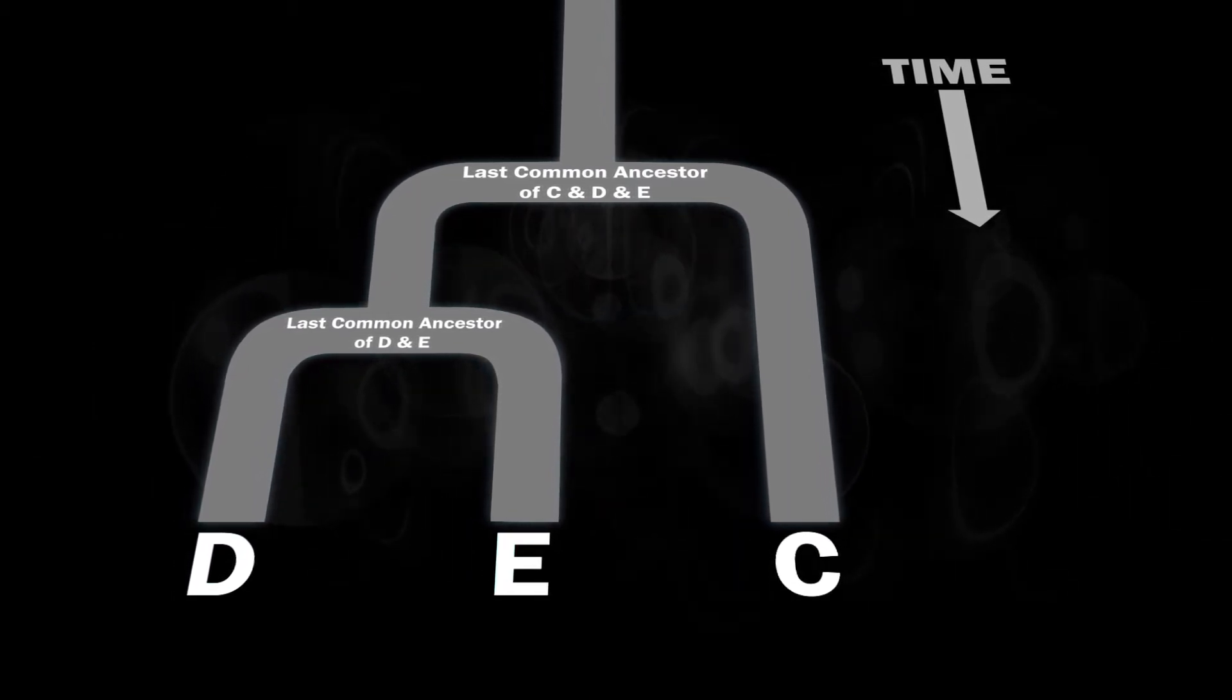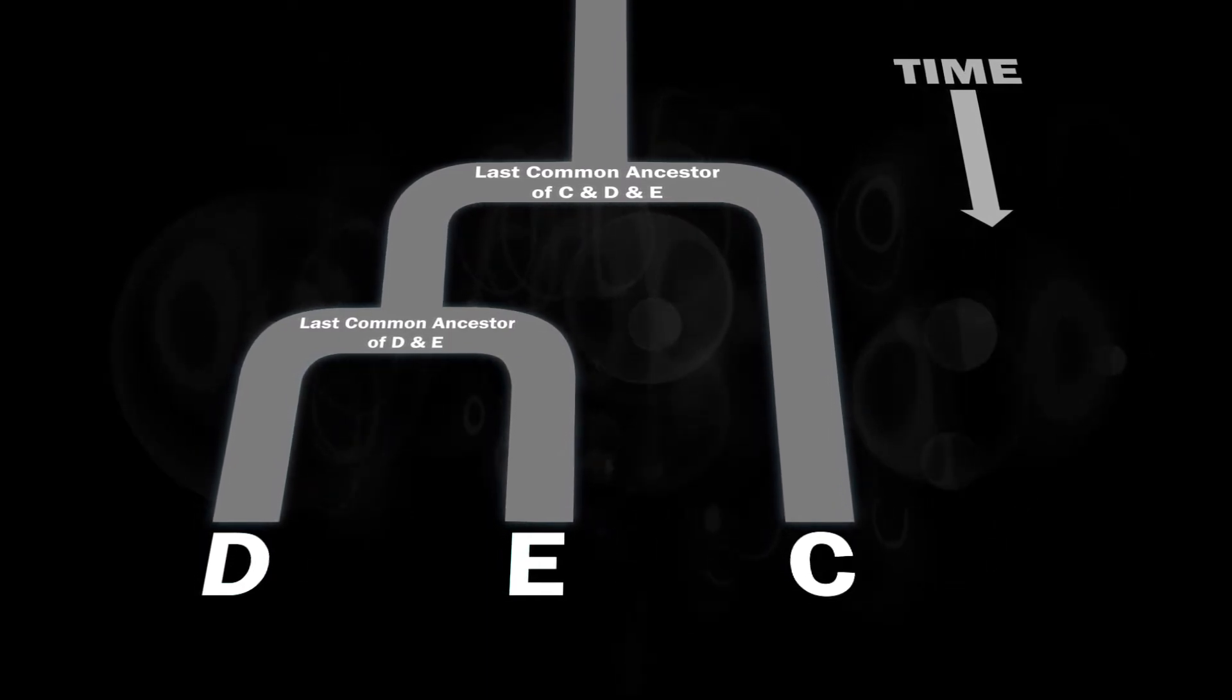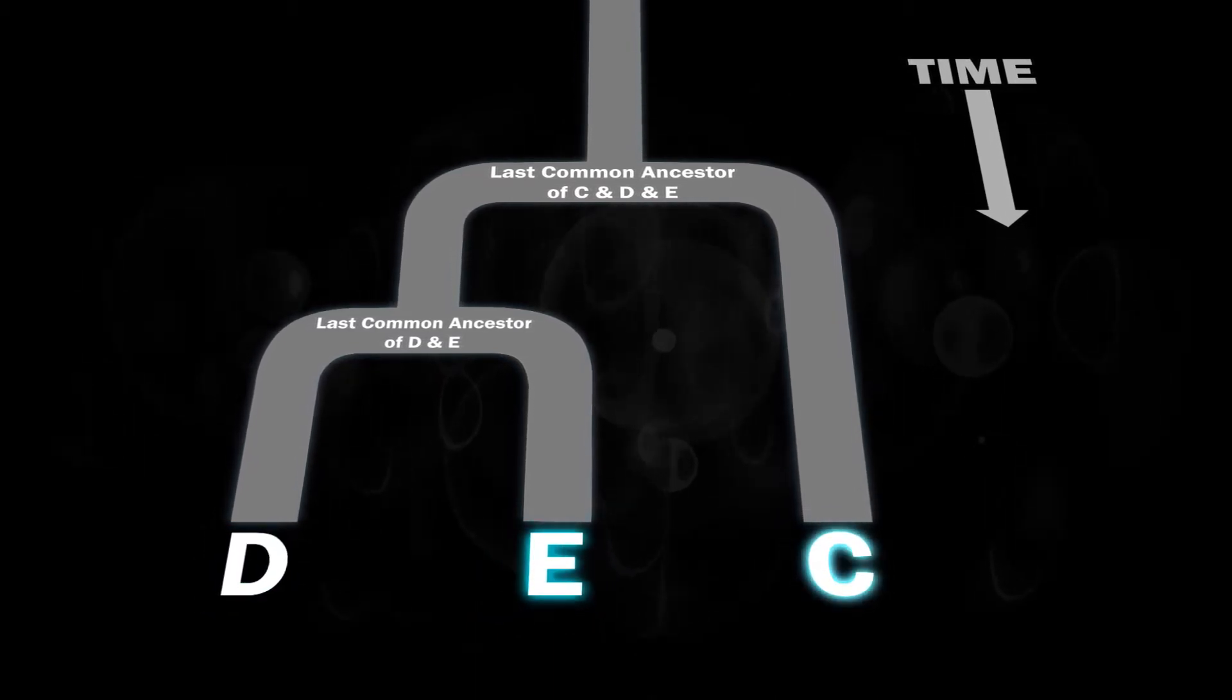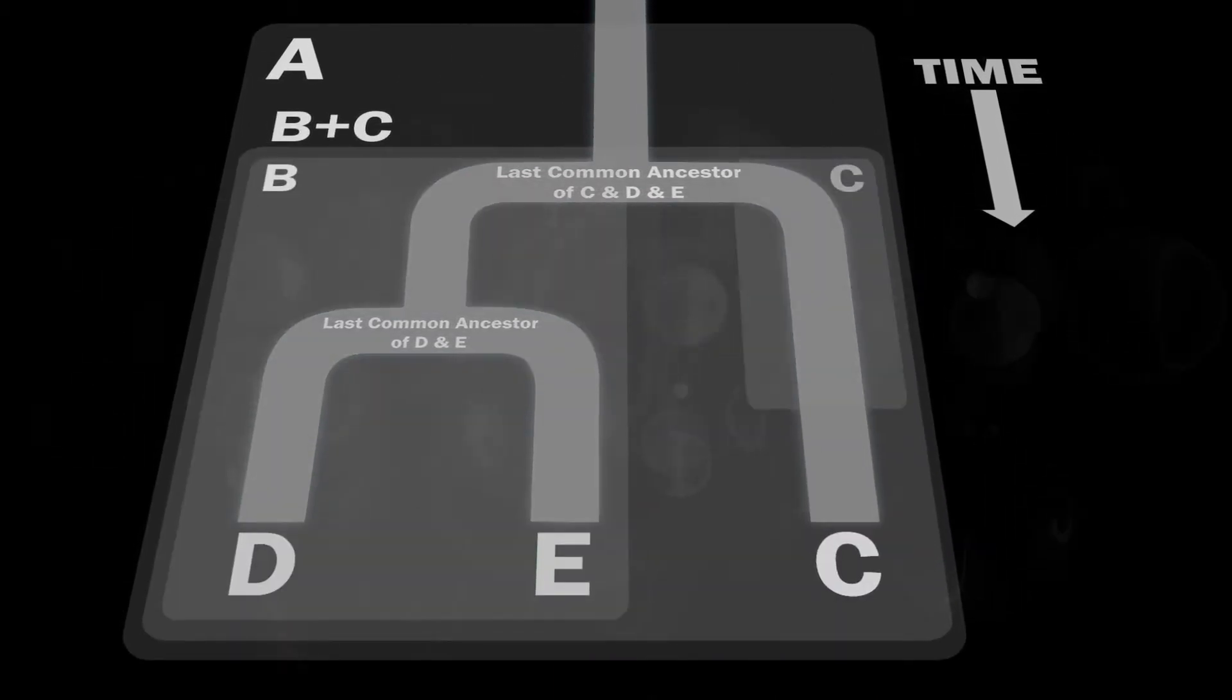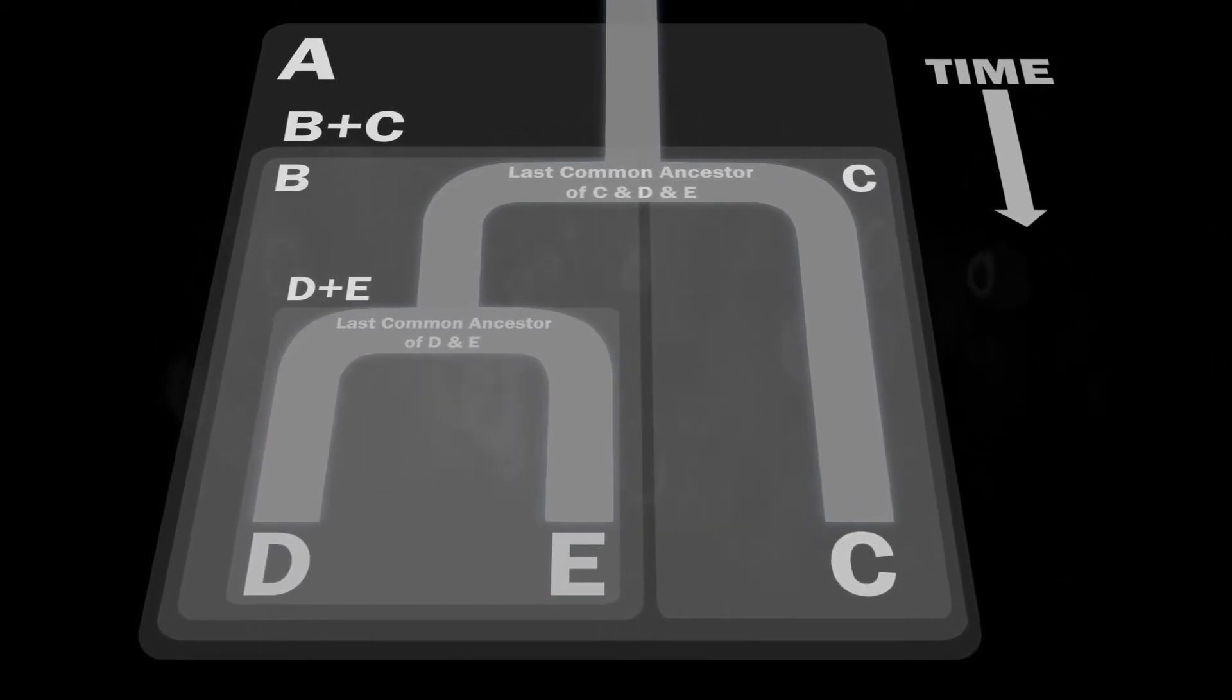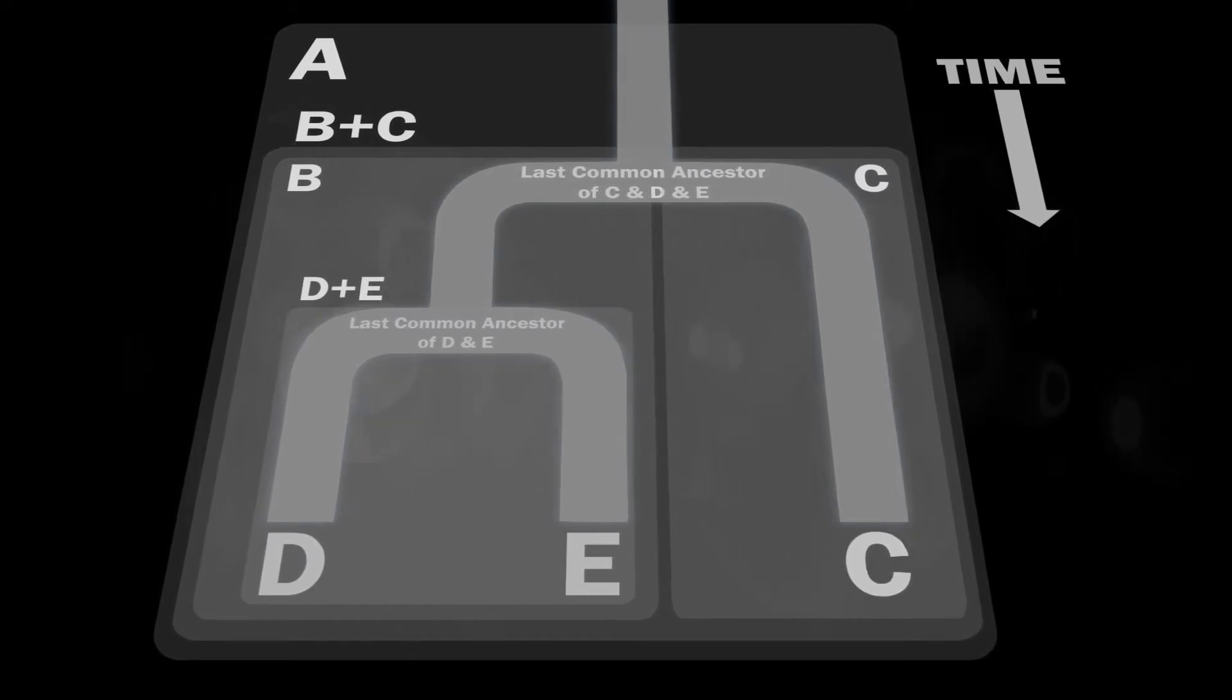So the tree can give basic information about the order that lineages were formed. It can also show which lineages are more closely related and which are more distantly related, and which organisms fall into which groups. In this example, E is more closely related to D than it is to C because it shares a more recent common ancestor with D.